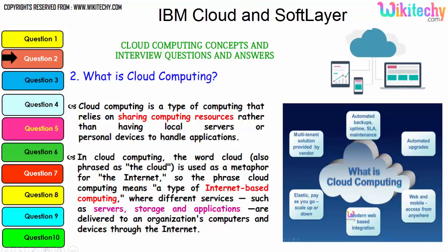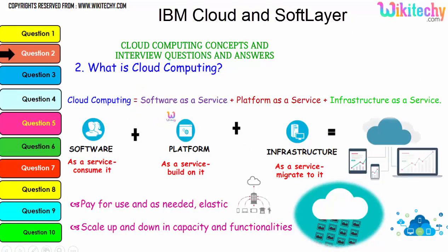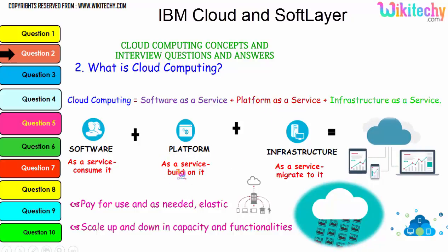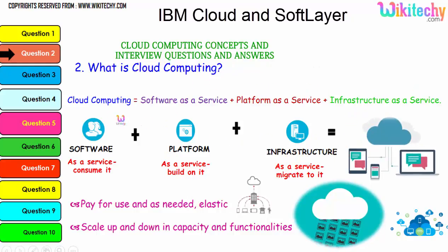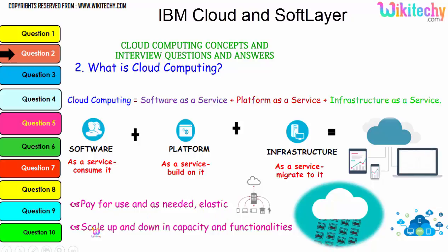Cloud computing consists of Software as a Service, Platform as a Service, and Infrastructure as a Service. The collaboration of software, platform, and infrastructure is referred to as cloud computing. The major advantage is pay-for-use — as needed and elastic. If you need minimal storage, you pay for that; if you need bigger storage, you pay for that. You can also scale up and down in capacity and functionality — that's the major advantage of cloud computing.